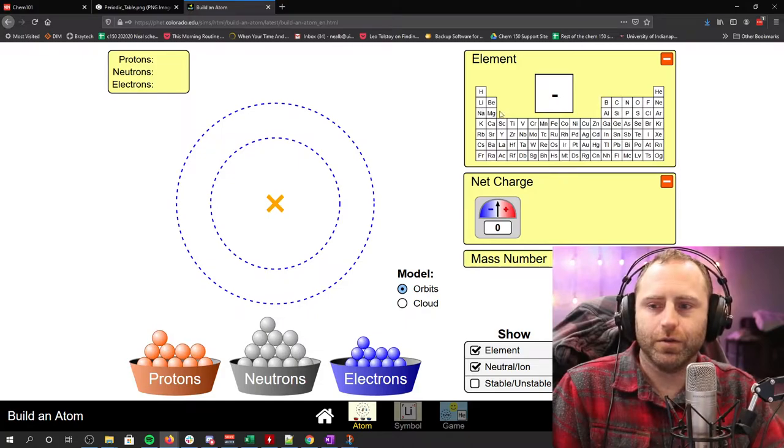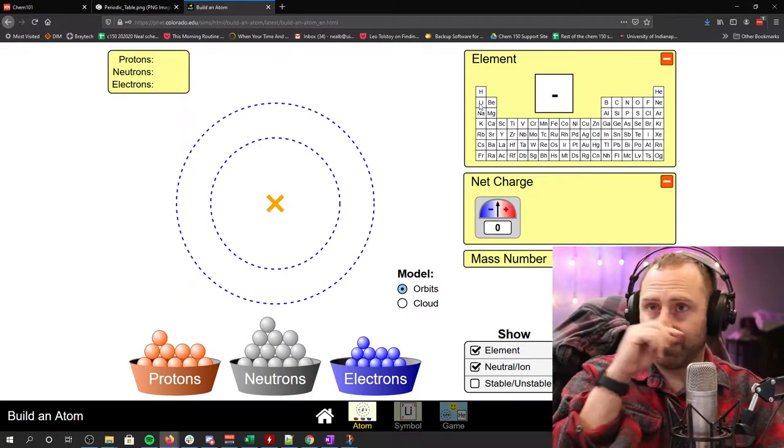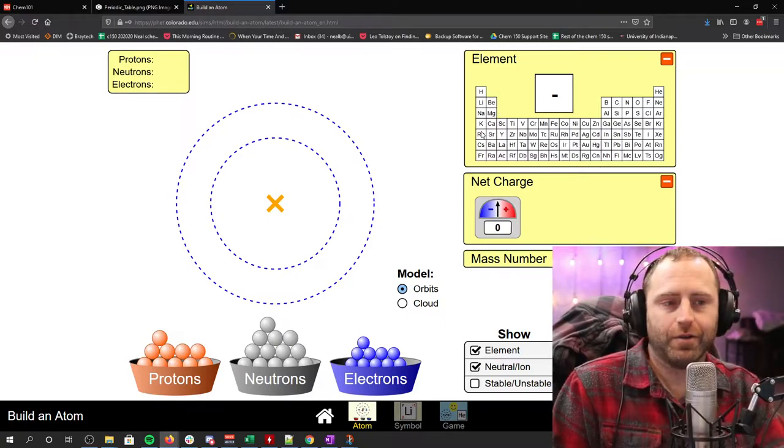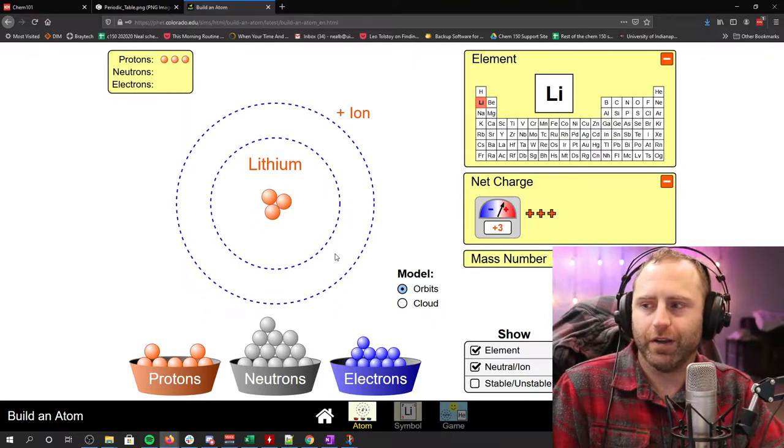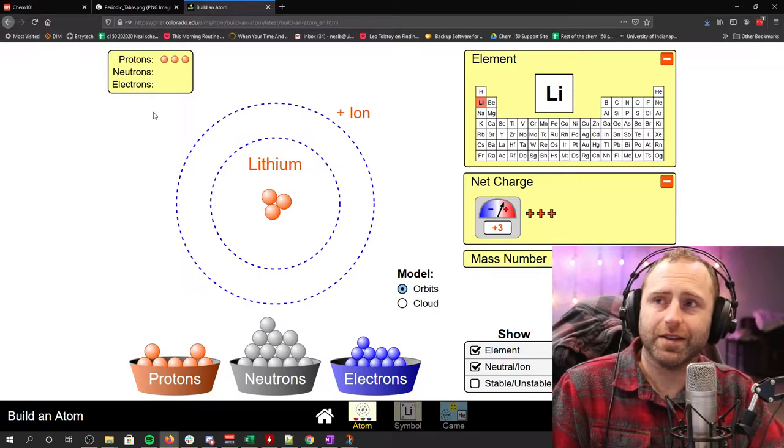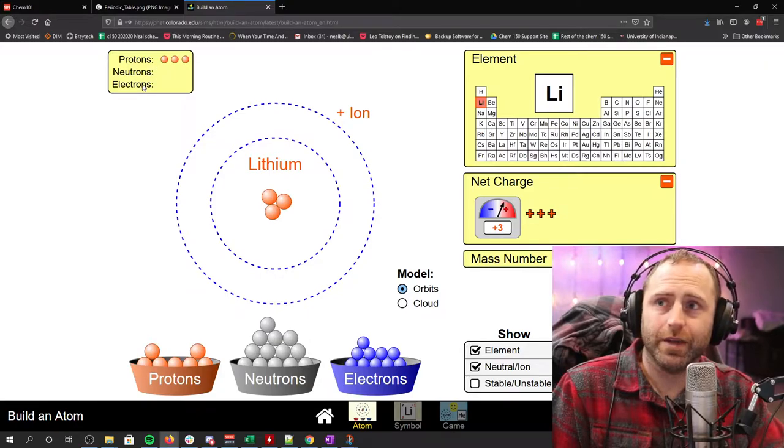Let's go to an element like lithium. So lithium is really small here. If you go on your periodic table at home, you're going to see it's got three protons in it. So one, two, three. We got lithium now. So up here in the top right, we've got this nice little count of how many protons, neutrons, and electrons do we have.